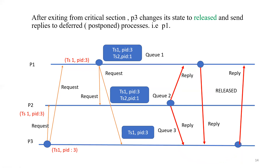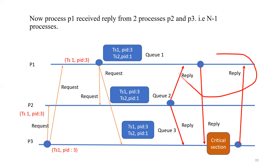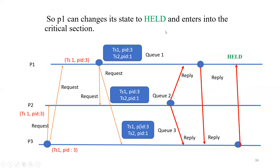After exiting the critical section, P3 changes its state to 'released' and sends replies to deferred processes. There is only one deferred process: P1. So process P3 sends a reply to deferred process P1. Now process P1 has received replies from two processes P2 and P3, that is N minus one processes. P2's reply was 'not requesting critical section,' and P3 sent a reply to P1 because it is exiting the critical section. Process P1 also received two reply messages and is now able to enter the critical section, changing its state to 'held.'